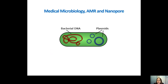Plasmids are particularly interesting because resistance is often found on plasmids. This resistance can more easily spread because plasmids can go from one bacterium to another, for example through conjugation.